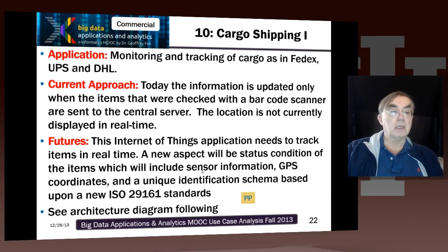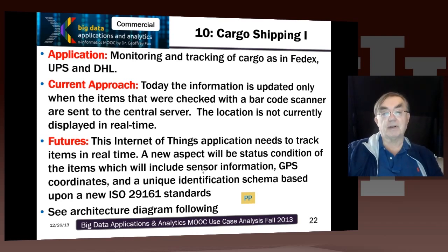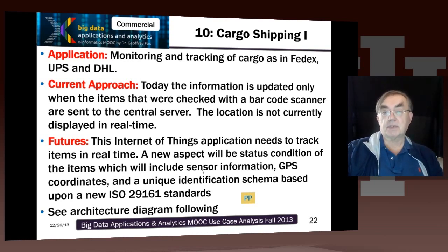This is actually a very important example. We have highlighted the Internet of Things, noting that there are going to be 75 billion things on the Internet by 2020. One important example is the global tracking of purchases, which FedEx, UPS, and DHL do. This had a lot of recent publicity at Christmas 2013, because bad weather actually delayed delivery of the growing number of purchases from Internet stores.